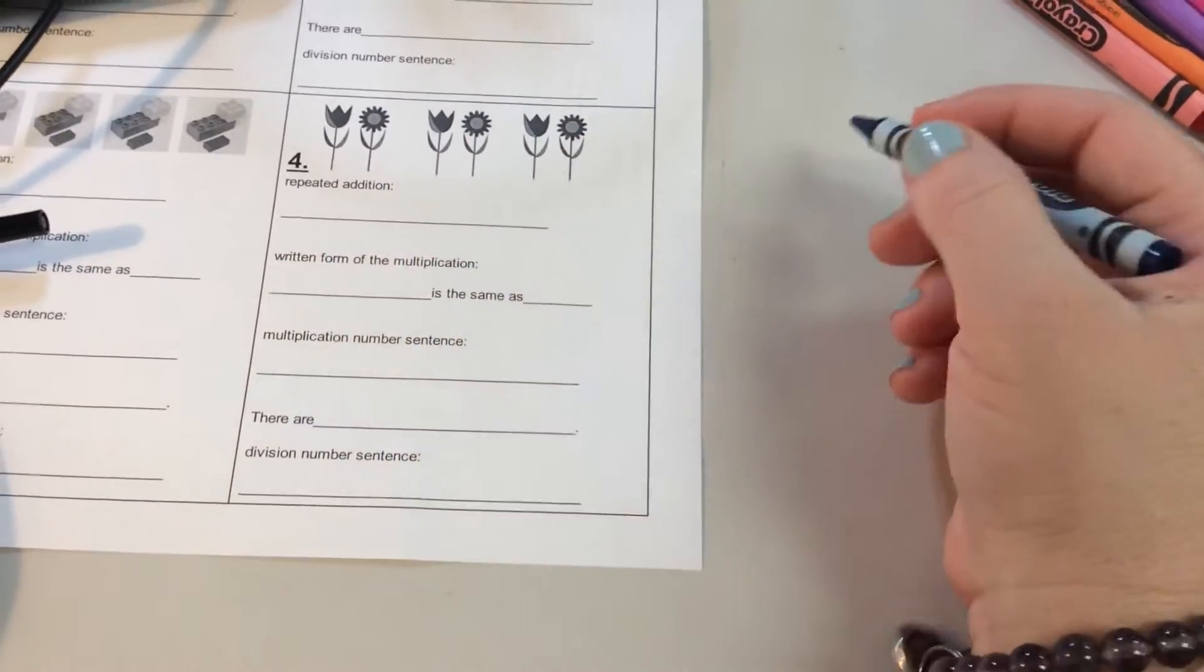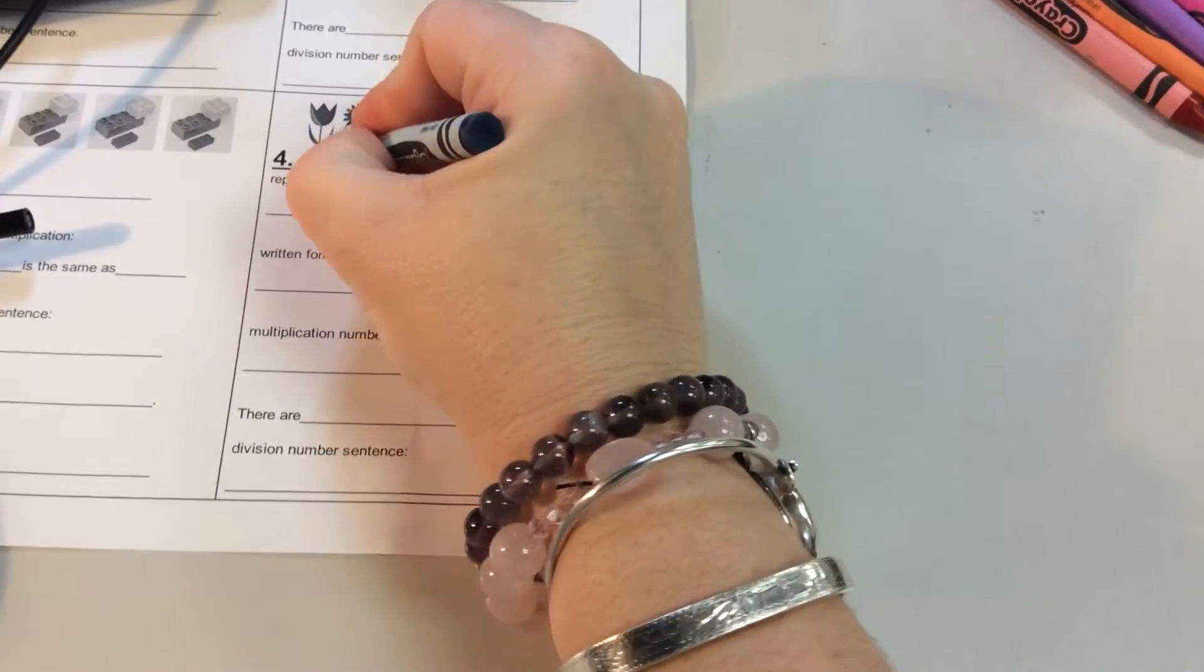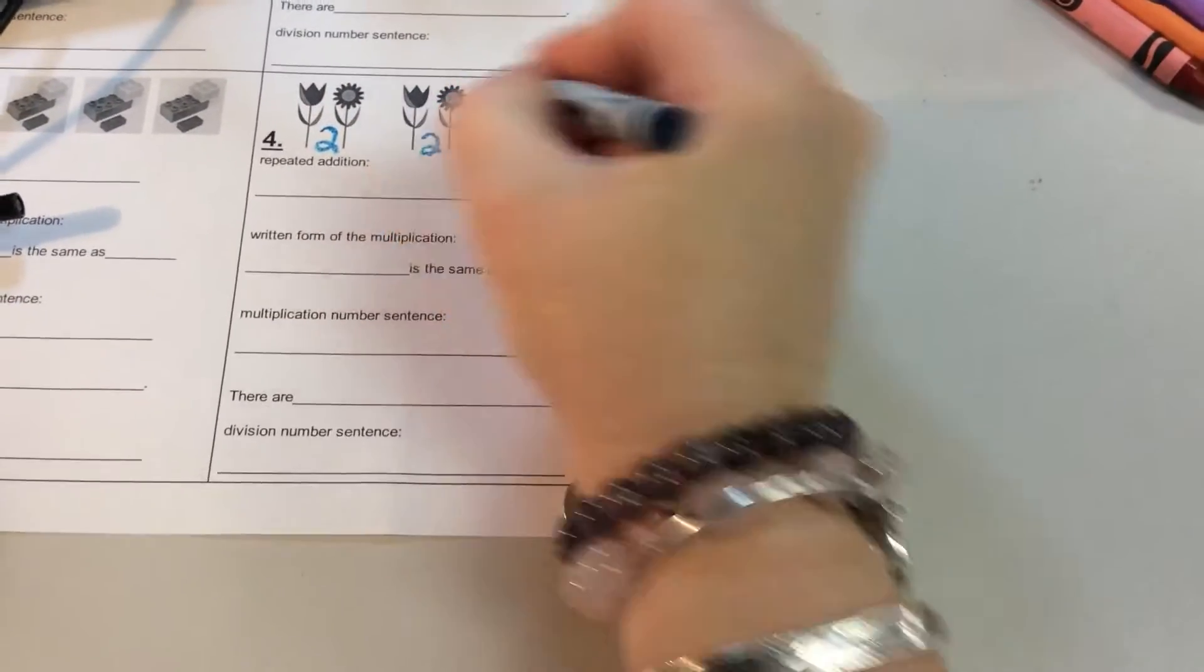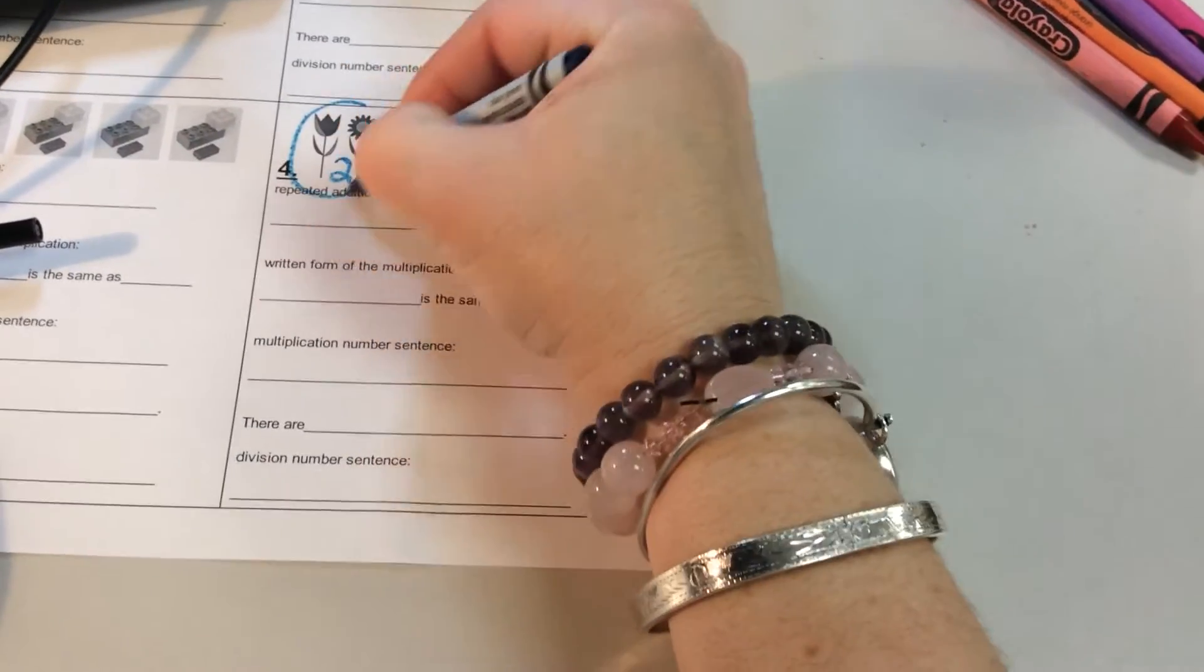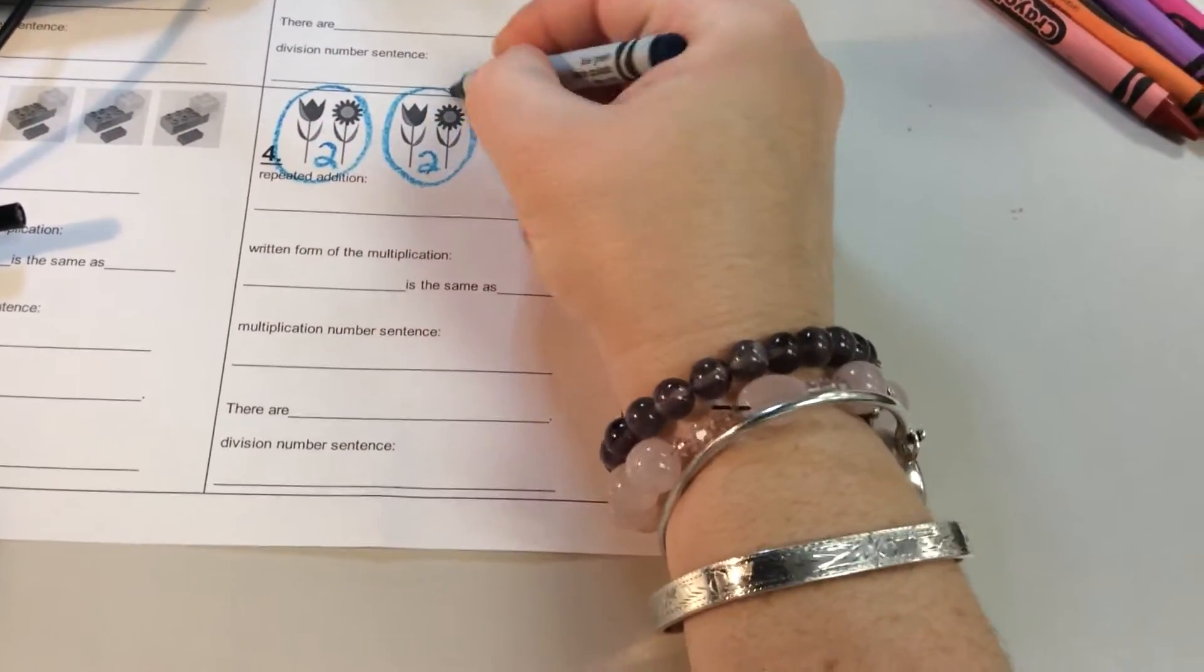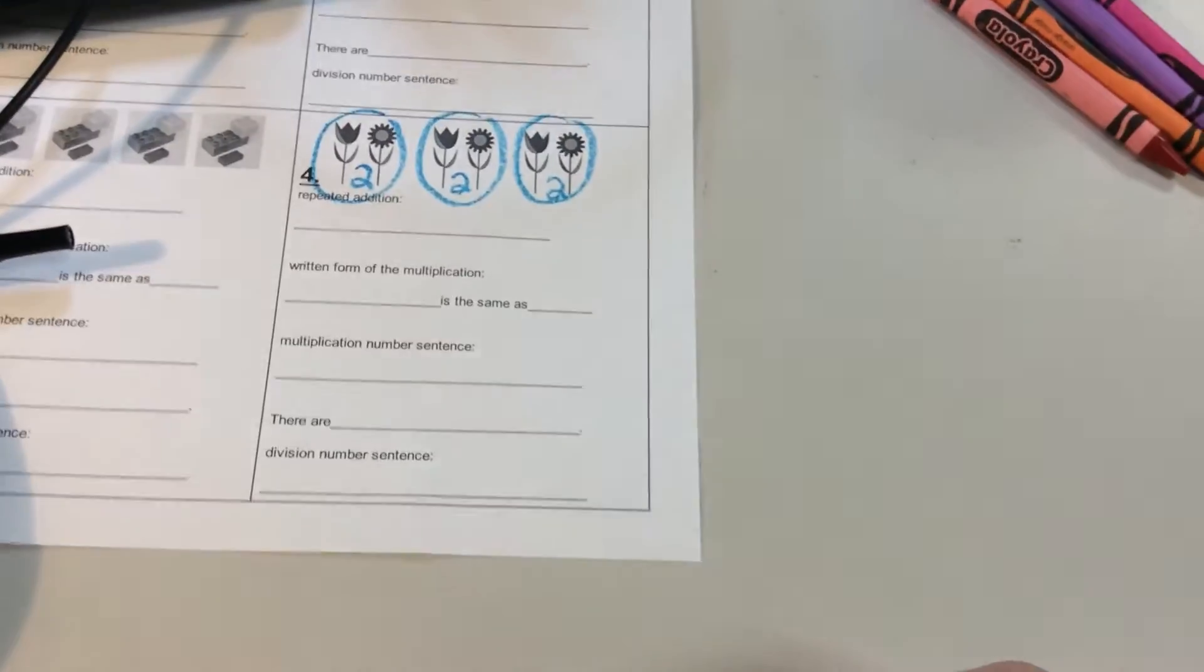Our picture tells us there's two here, there's two there, and there's two there. If we know multiplication, we say groups. One group. Let's show our work. Let's show our groups. It's nice to put a circle on those groups.